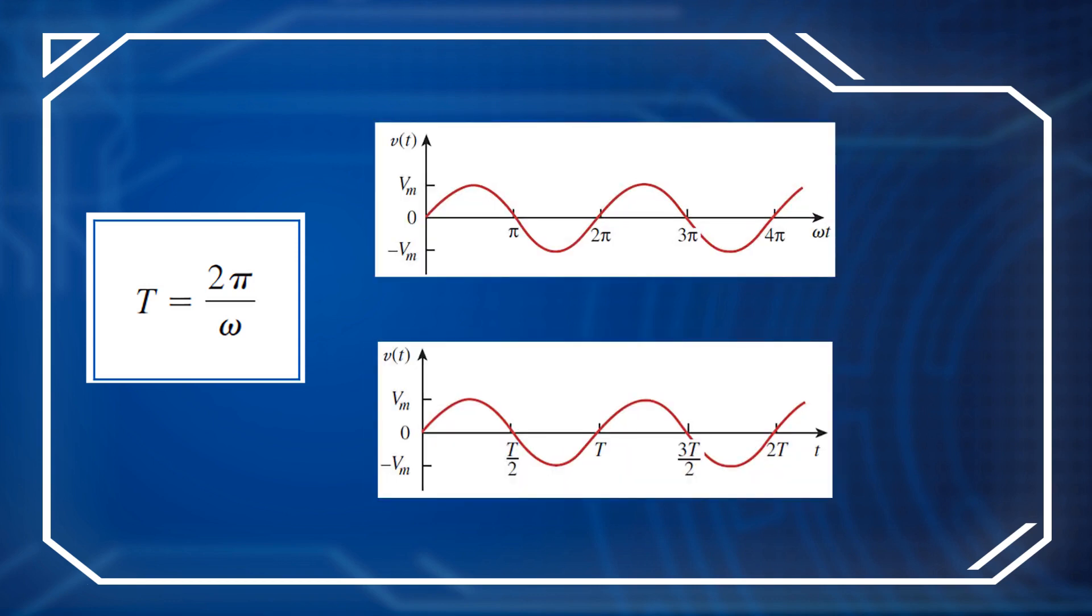For this sinusoid, the period T equals 2π over ω, and you can find the waveform of this sinusoid in both graphs. For the first graph, the x-axis is ωt. For the second graph, the x-axis is t. But actually, they represent the same value, v(t).